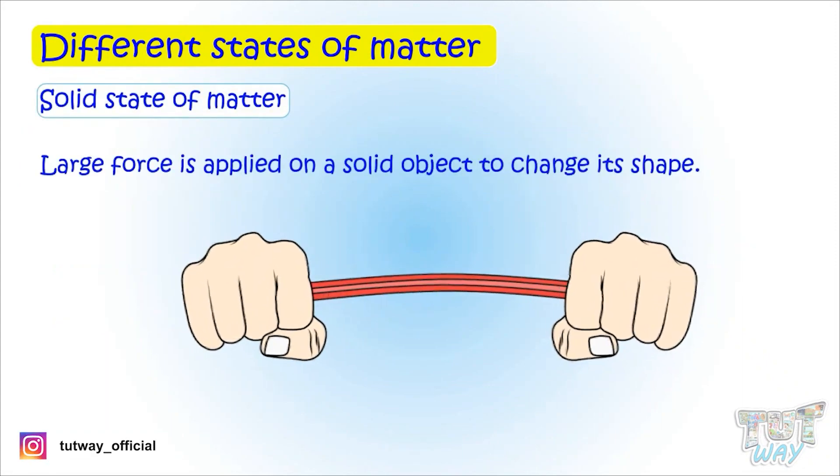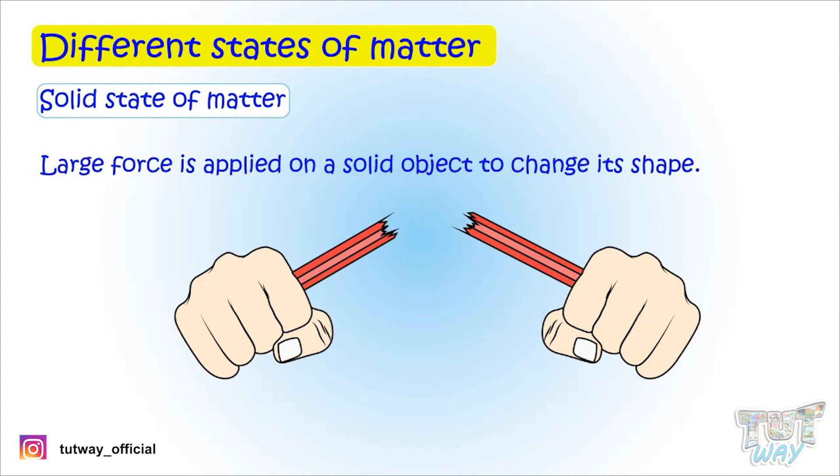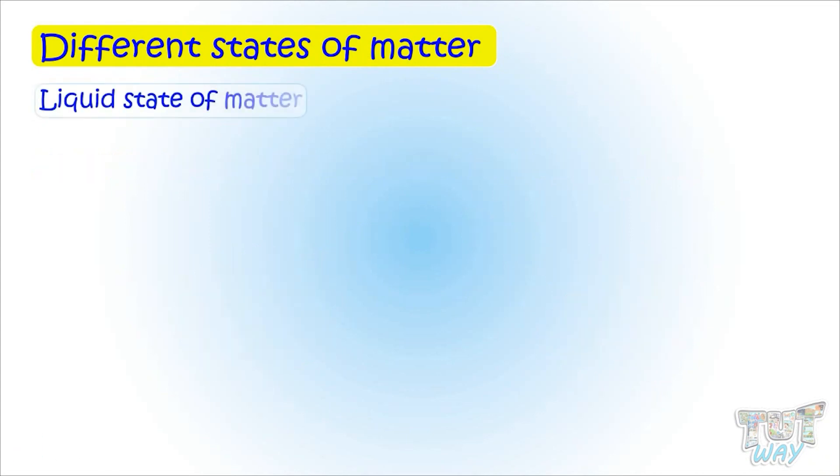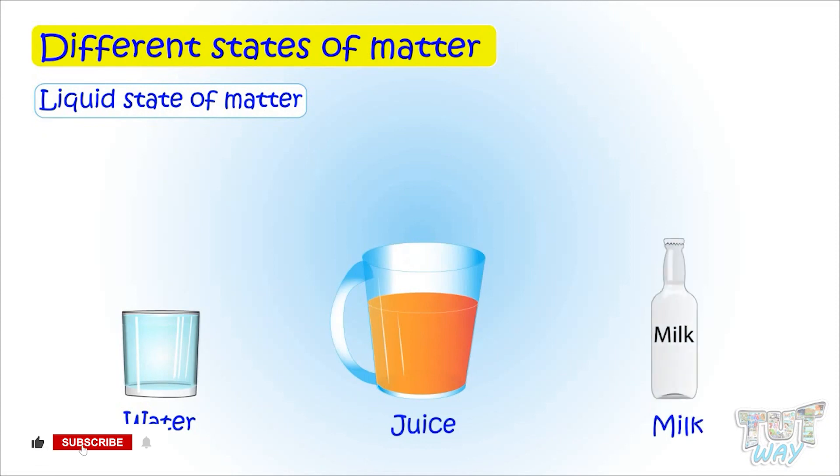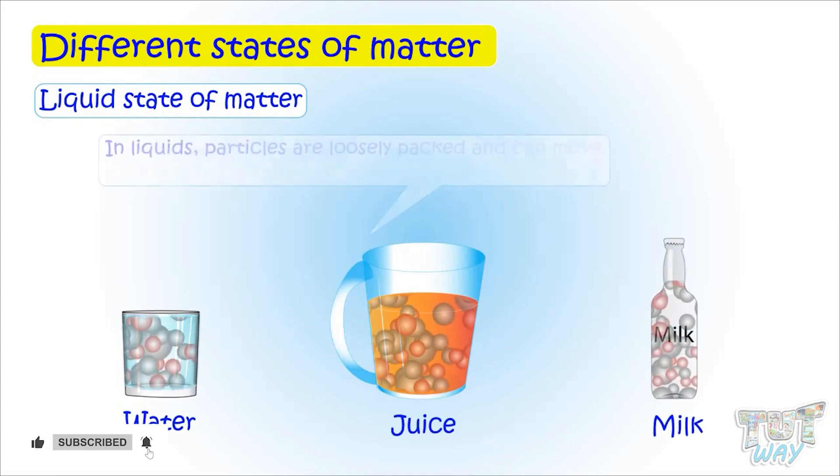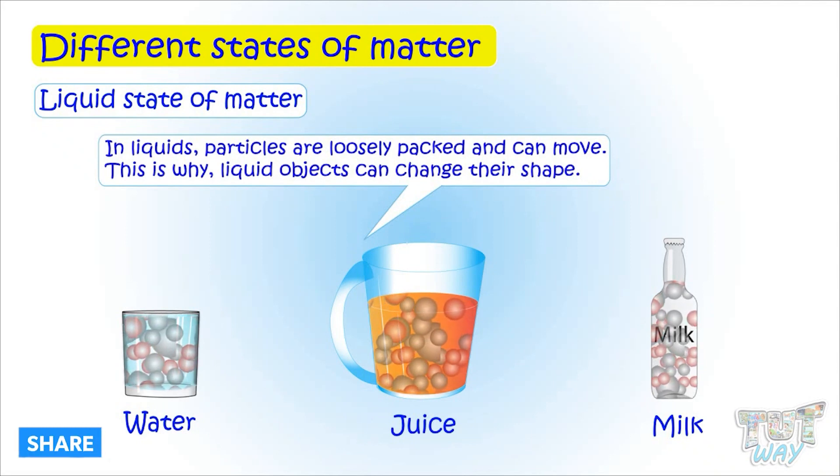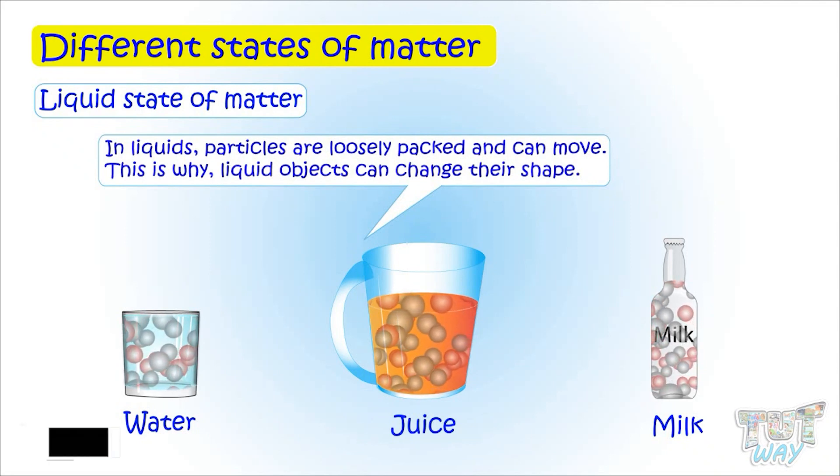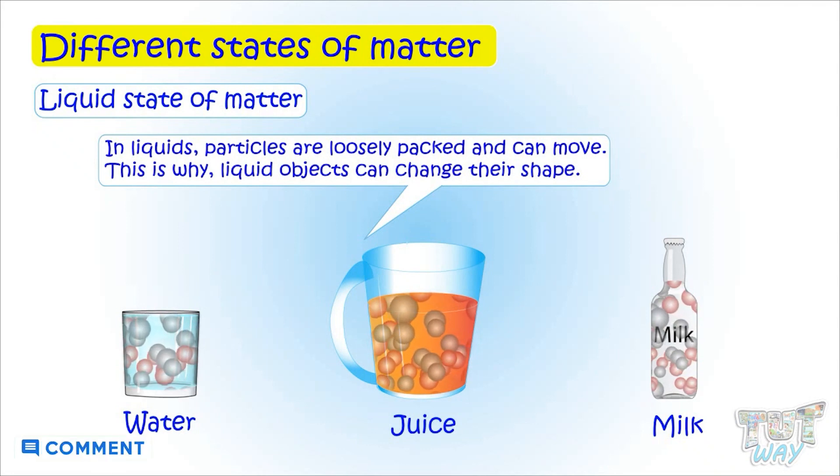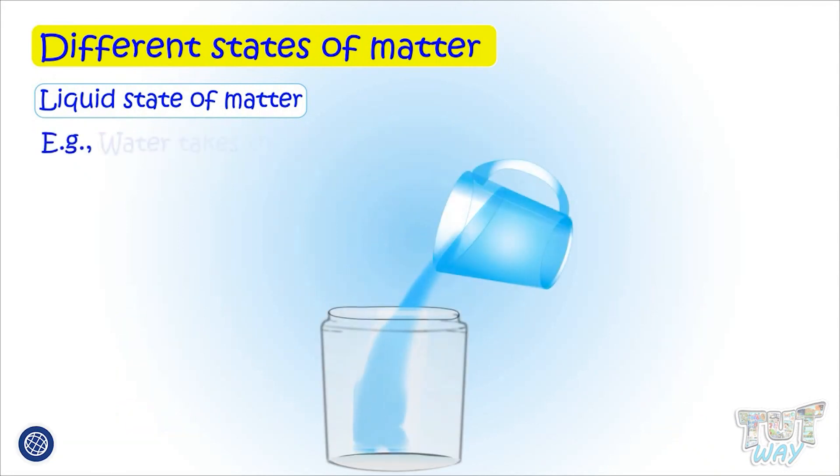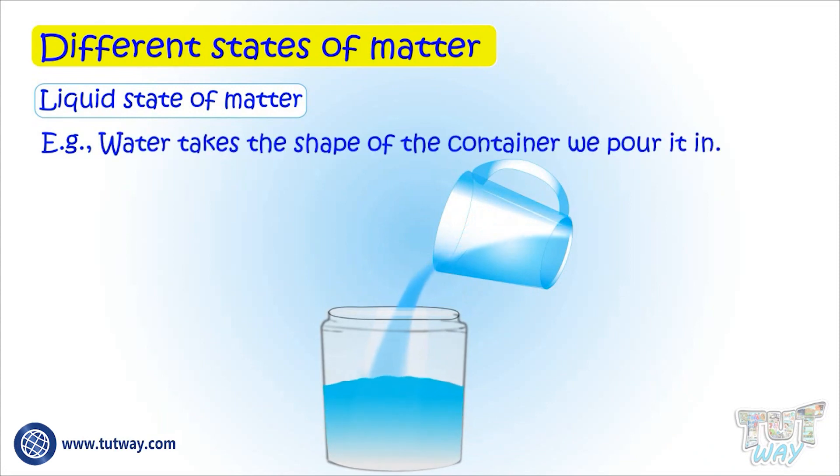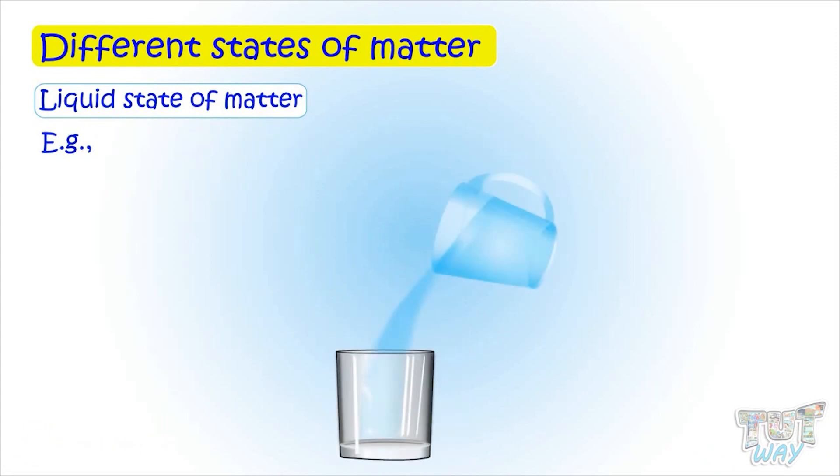Next we have liquids. In liquid objects like water, juice, milk, or any liquid, particles are loosely packed and can move. This is why liquid objects can change their shape. For example, water takes the shape of the container we pour it into.